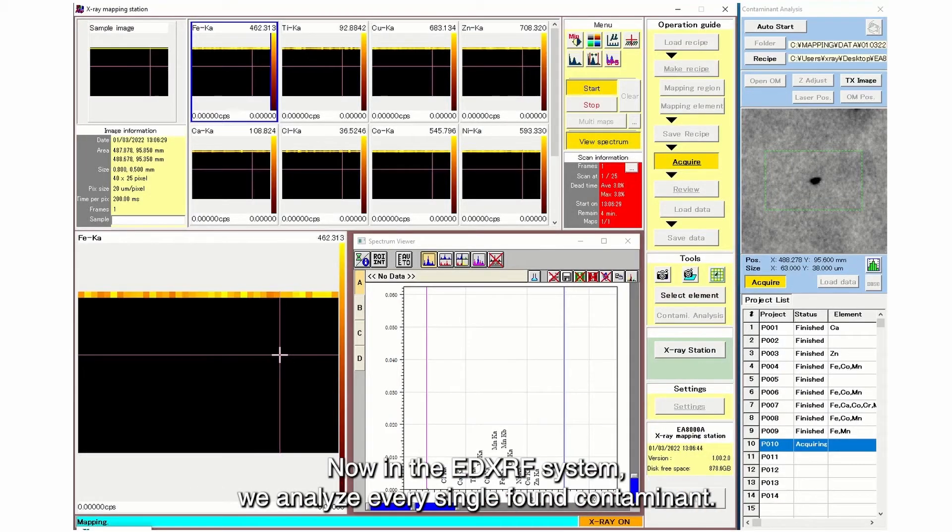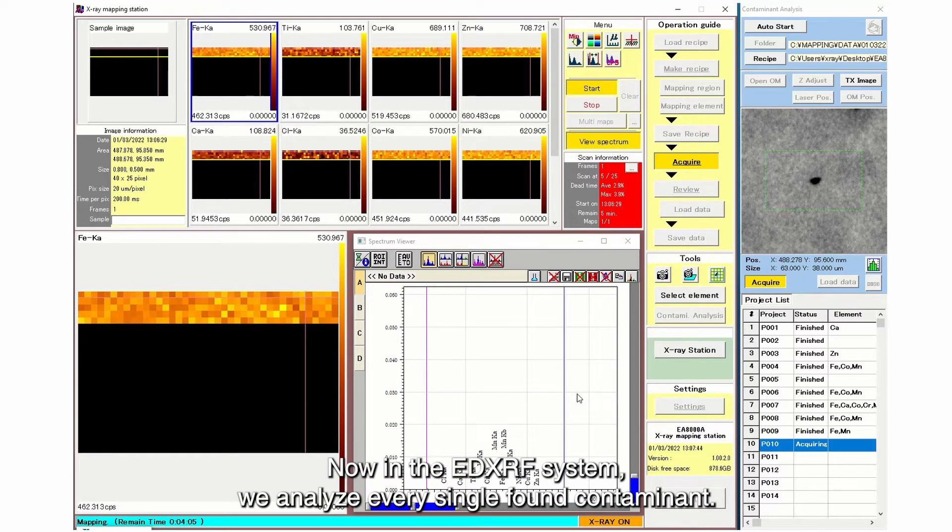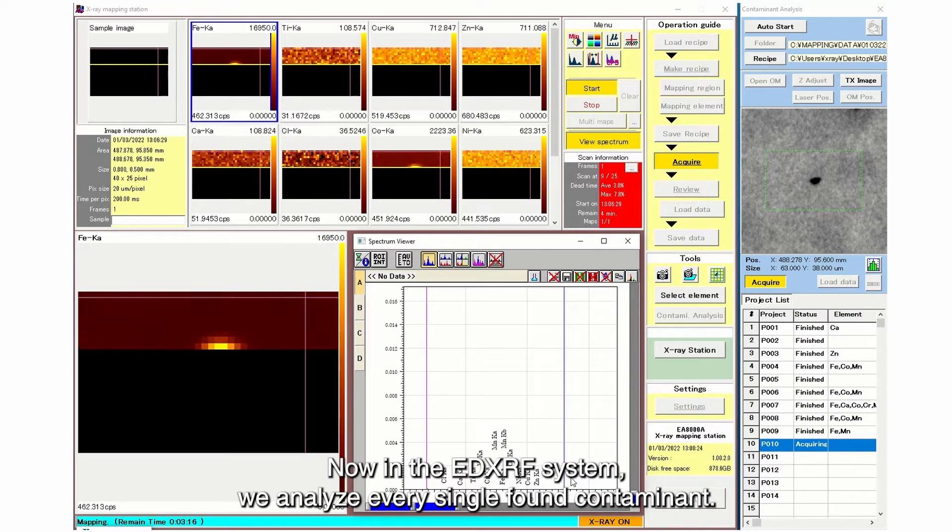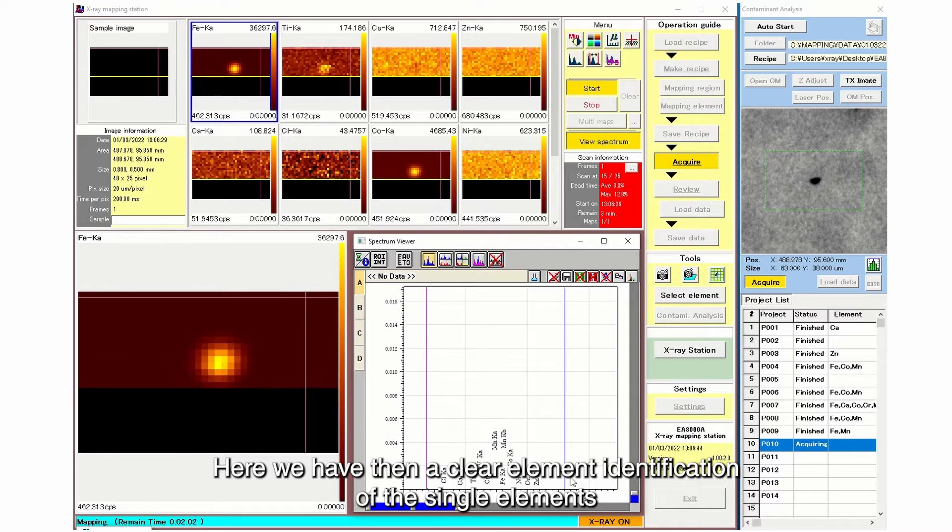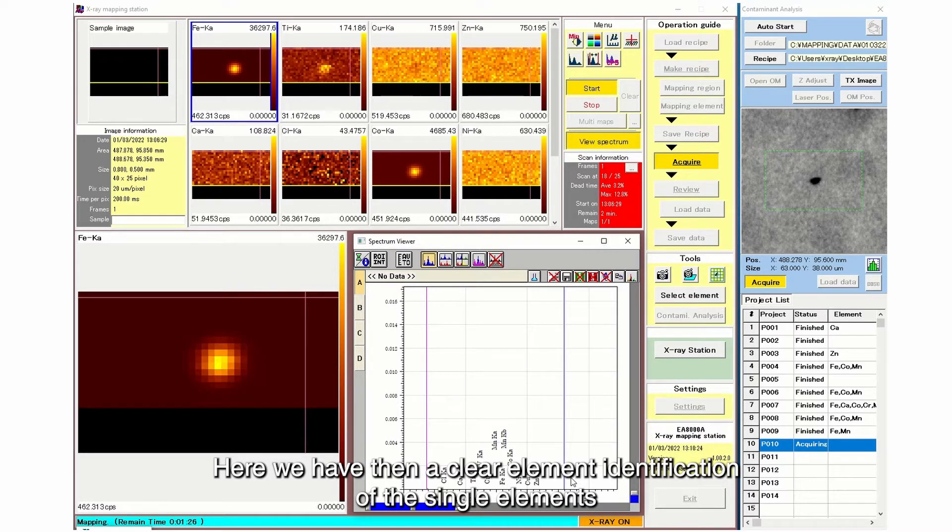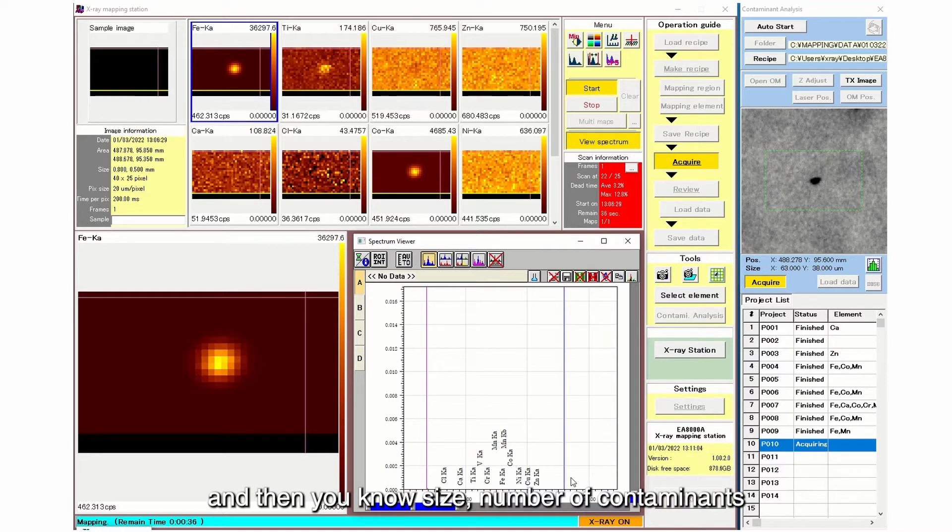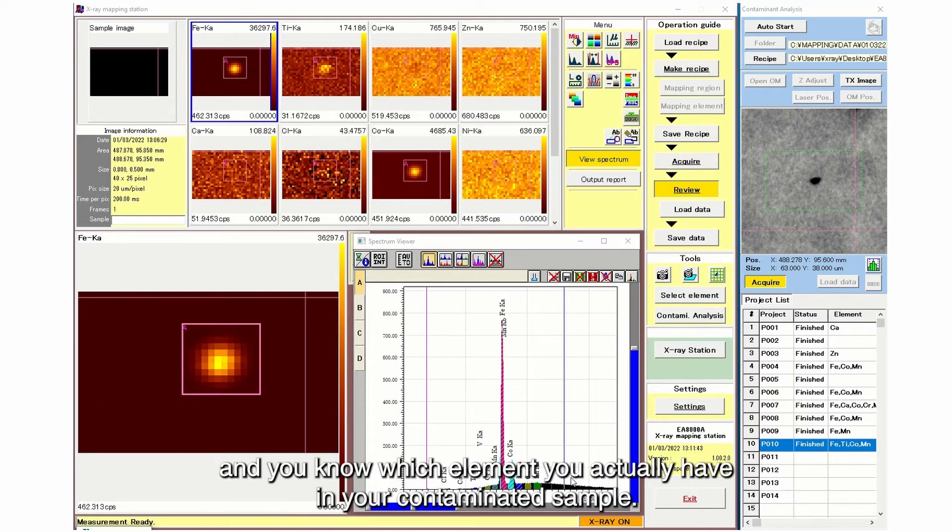Now in the EDXRF system we analyze every single found contaminant and here we have then a clear element identification of the single elements and then you know size, number of contaminants, and you know which element you actually have in your contaminated sample.